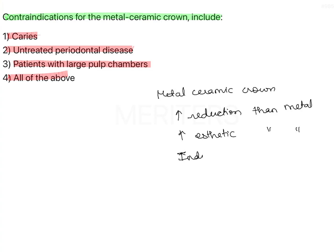When you talk of caries as a contraindication, you cannot have a crown over active caries. Having a crown on a carious tooth is a complete disaster because it is still going to lead to pulpal involvement and subsequent pathogenesis of a periapical lesion.